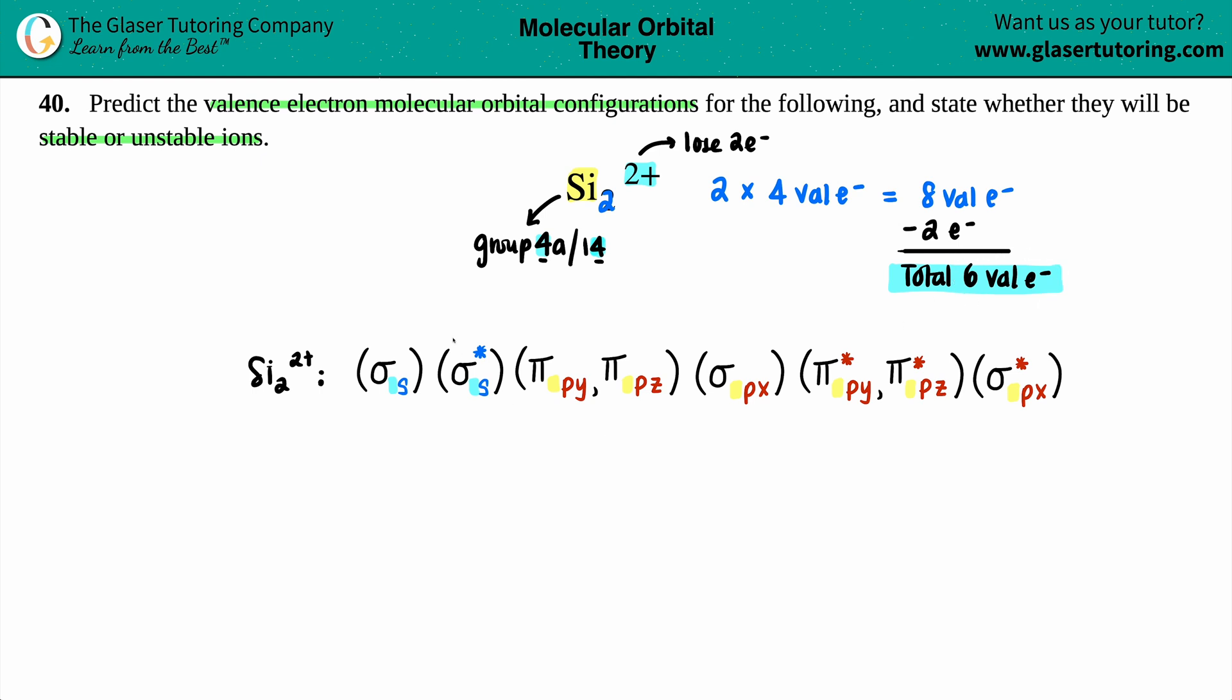Now we just have to fill in our six valence electrons in this diagram. First, I have to put in what s and what p we're in. Are we in the 2s or 3s? This comes from the period. Silicon is in group 4A, but on the periodic table it's in period 3. That's your n value, so you're in 3s and 3p across the board.